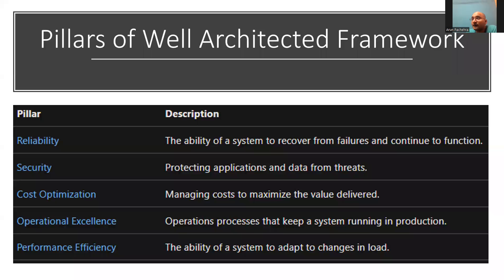The pillars of the Azure Well-Architected Framework are: reliability, security, cost optimization, operational excellence, and performance efficiency. All five pillars help you balance your architecture, find out if you're missing something, and make your architecture better.